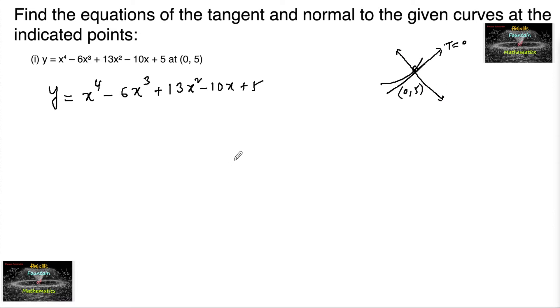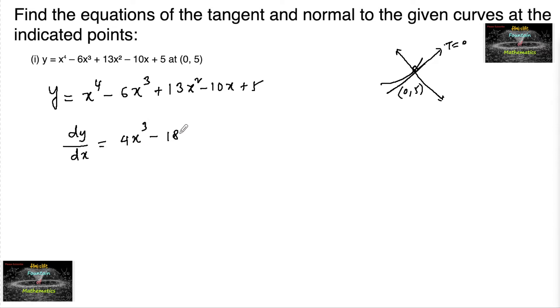So let's find the slope of the tangent to the curve. Differentiating, dy/dx = 4x³ - 18x² + 26x - 10.